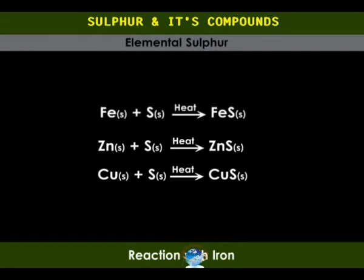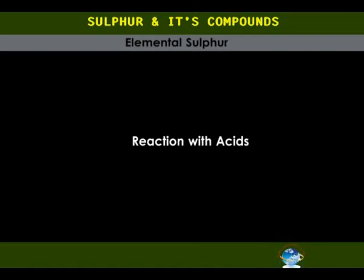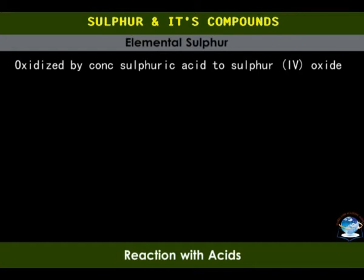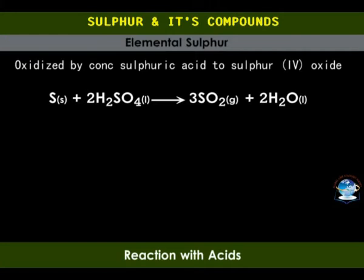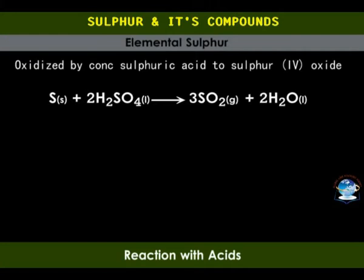Sulfur does not react with dilute acids. However, concentrated sulfuric acid oxidizes sulfur to sulfur dioxide (SO₂). Concentrated nitric acid oxidizes sulfur to sulfuric acid and is itself reduced to nitrogen dioxide (NO₂).